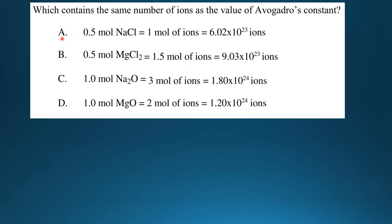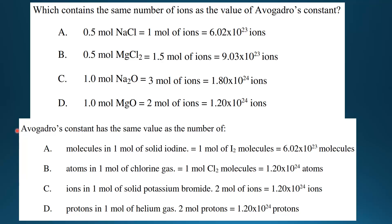Finally, Avogadro's constant has the same value as the number of: option A — molecules in 1 mole of solid iodine. One mole of iodine molecules equals 6.02 times 10 to the 23 molecules, so A is the correct answer. Option B: atoms in 1 mole of chlorine gas. Chlorine gas is a diatomic gas, meaning one molecule consists of 2 atoms, so we multiply 1 by 2 and then by Avogadro's constant to give 1.20 times 10 to the 24 chlorine atoms.